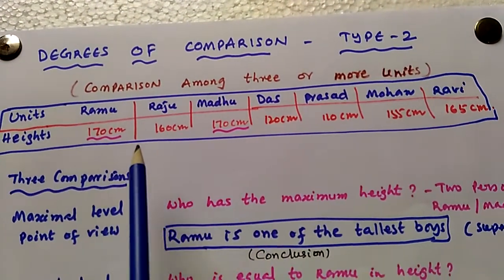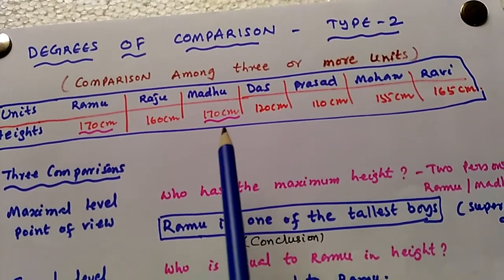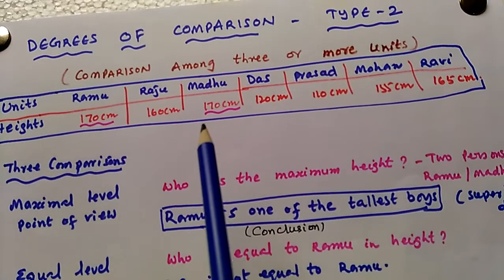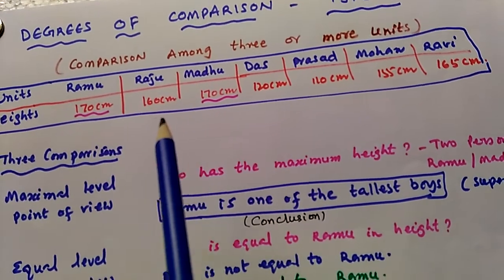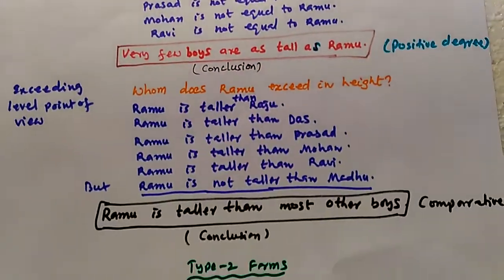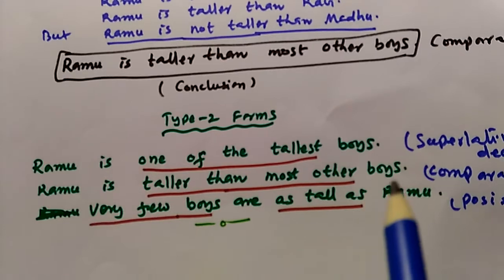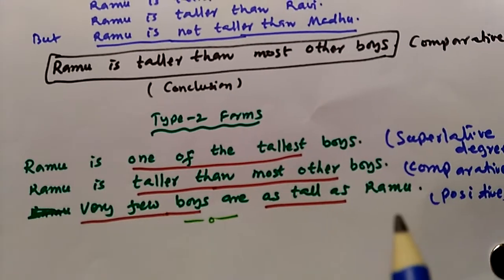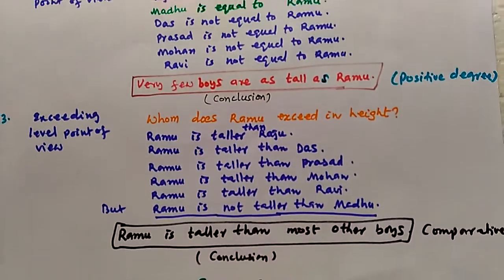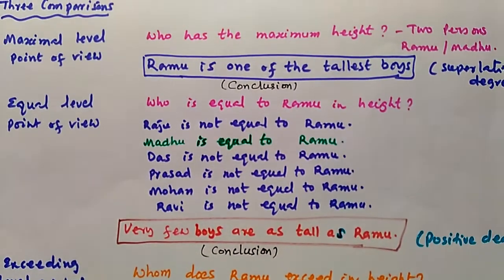In this table, two persons have the maximum height. Whenever more than one person has the maximum value of the quality being compared, we get the type 2 form: 'Ramu is one of the tallest boys,' 'Ramu is taller than most other boys,' and 'very few boys are as tall as Ramu.' If you like this video, please subscribe to this channel. Thank you very much for watching. Namaste.